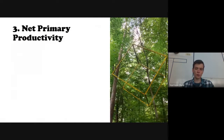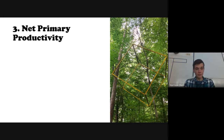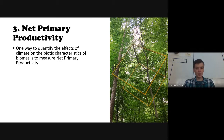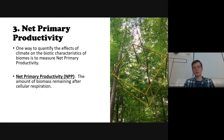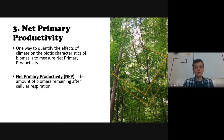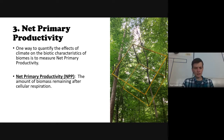Here's a new term: Net Primary Productivity, or NPP. This is one way to quantify the effects of climate on the biotic characteristics of biomes — a way to measure how an ecosystem is doing biotically. We abbreviate it NPP. It's defined as the amount of biomass remaining after cellular respiration.